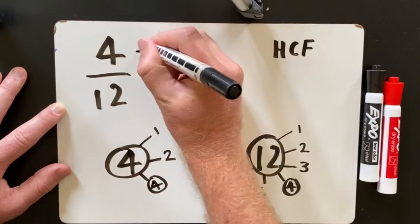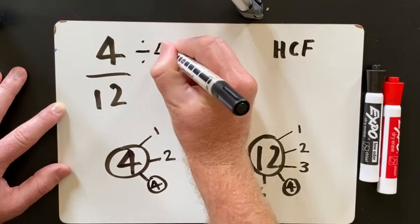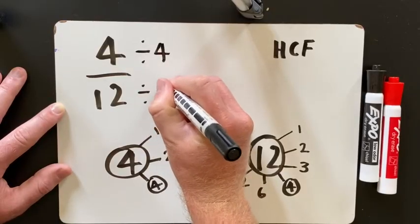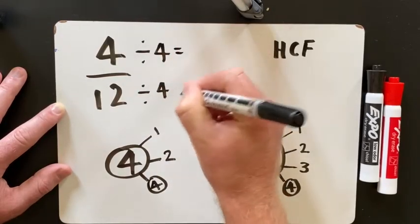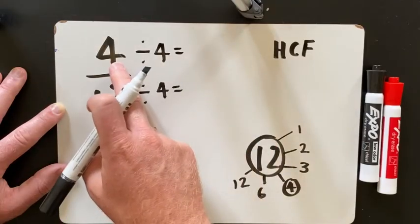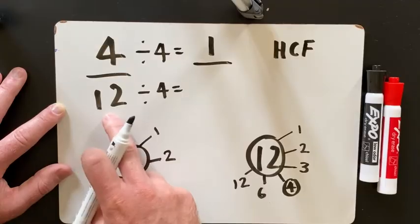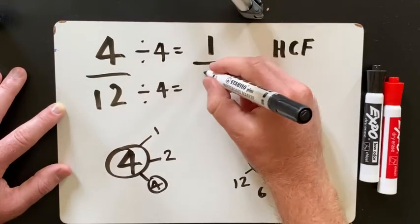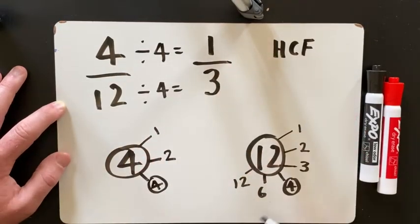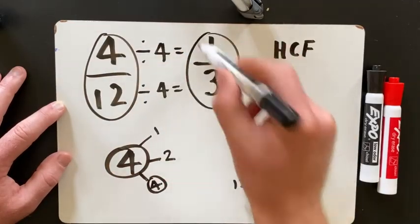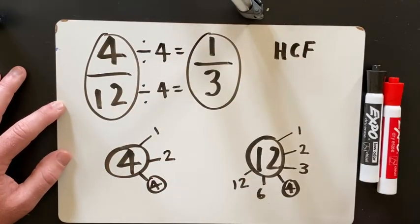Then all you do is you divide the numerator and the denominator by the highest common factor. So 4 divided by 4 is 1, 12 divided by 4 is 3. So I can see that 4 twelfths, simplified, is the same as 1 third.